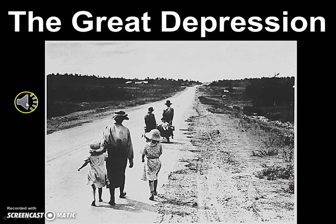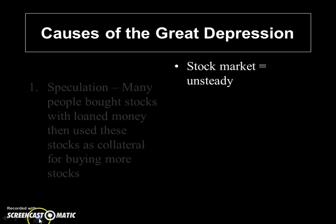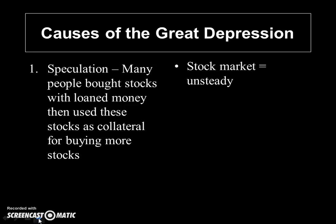The Great Depression. So what were the causes of the Great Depression? We already looked at the unsteady stock market. Speculation during the 1920s — people buying stocks on loan money and on the margin, using stocks for collateral to buy more stocks — led to an unsteady stock market as it began to fall in late 1929.